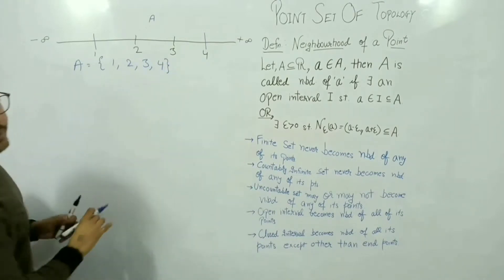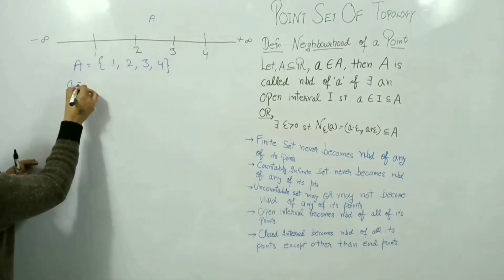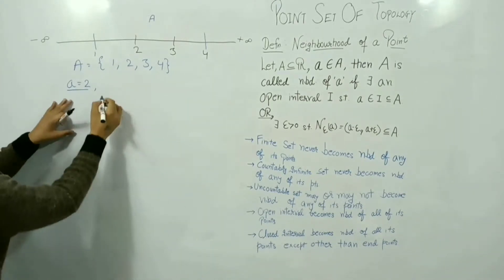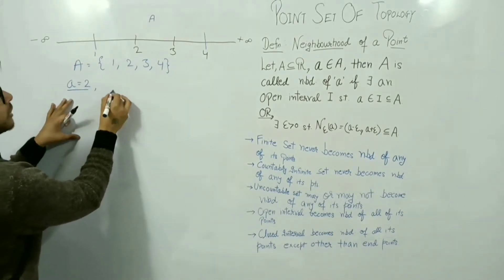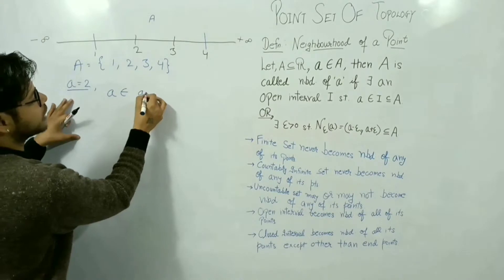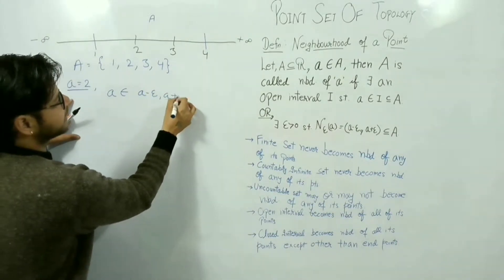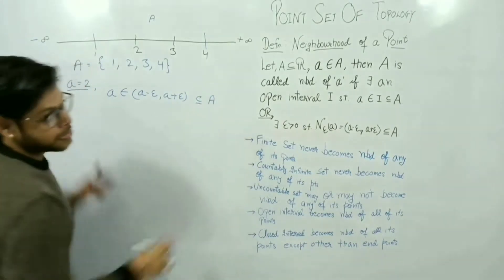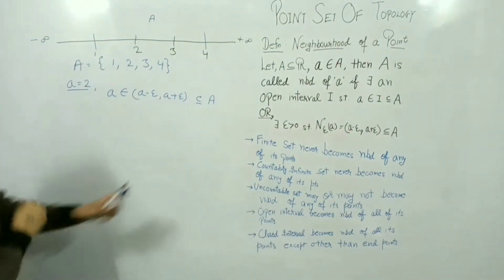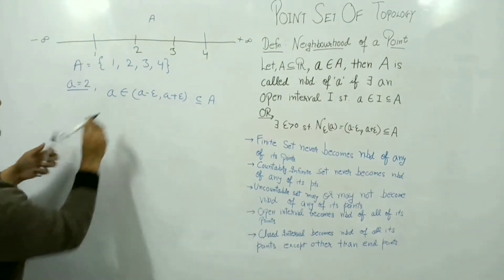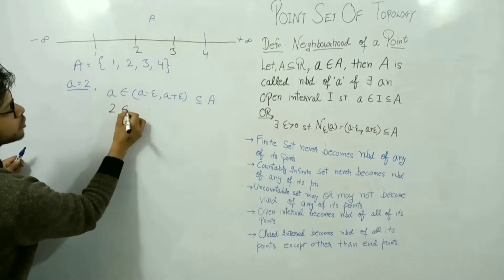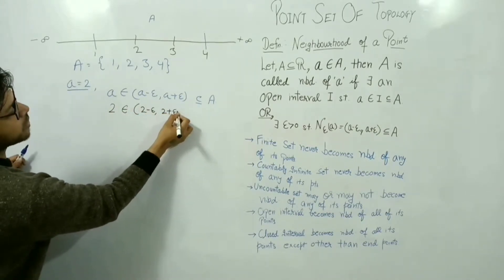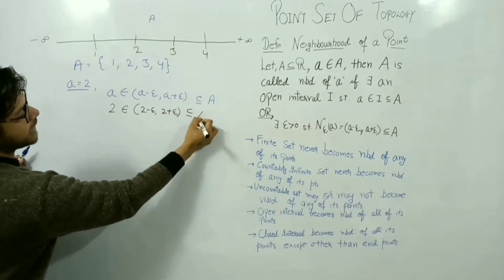Let me check for point a equals 2. According to the definition, 2 belongs to (2 minus epsilon, 2 plus epsilon) which must be a subset of A, that is {1, 2, 3, 4}.